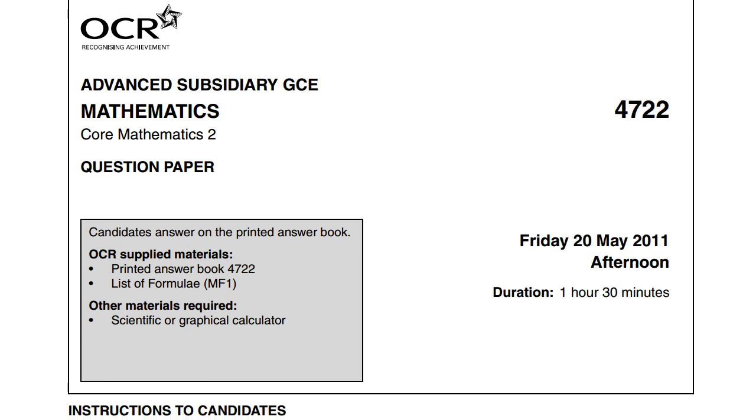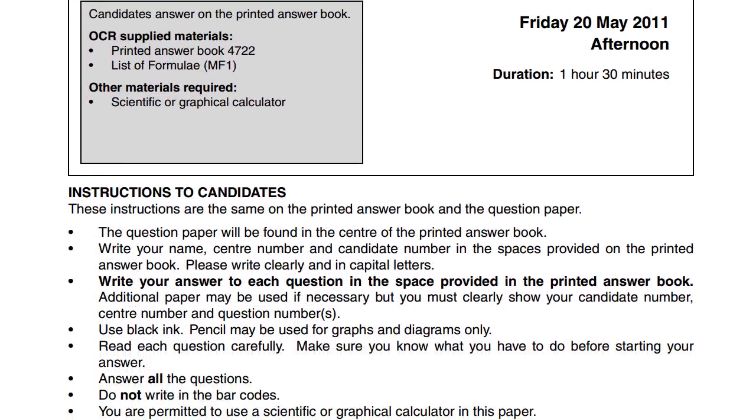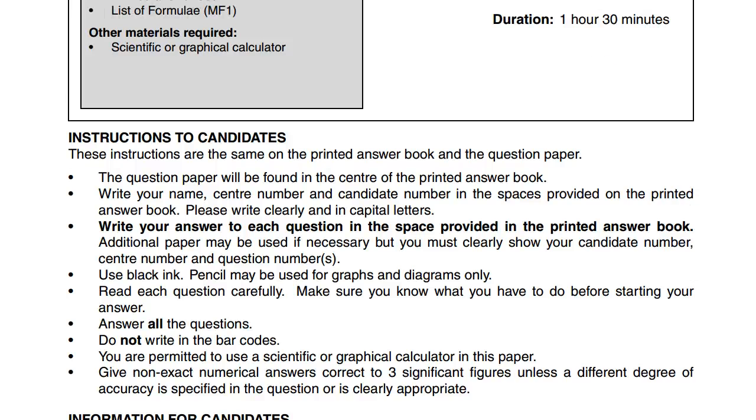You've got an answer book and question paper. The question paper is found in the center of the printed answer book. Write your name, center number, and candidate number in the spaces provided on the printed answer book. Please write clearly in capital letters. Write your answer to each question in the space provided in the printed answer book. That's emboldened, isn't it? So it's extremely important.